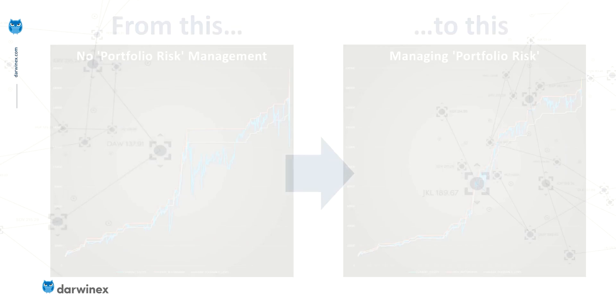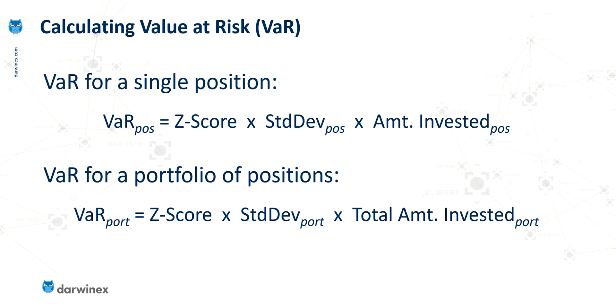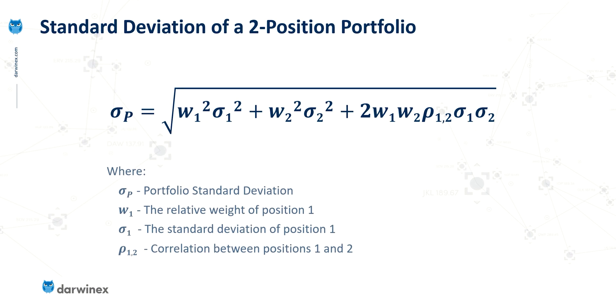And looking at two formulas that we've used in previous episodes. The first of those for a value at risk for a single position and then the value at risk for a portfolio of positions. The main difference between these two, as we've said, is the calculation of the standard deviation of the portfolio. And if you remember for just two positions, this is the formula that we used. And again I won't go into this in any detail here because I've covered it in previous episodes and you can access those previous episodes by clicking on the playlist link in the description below the video.